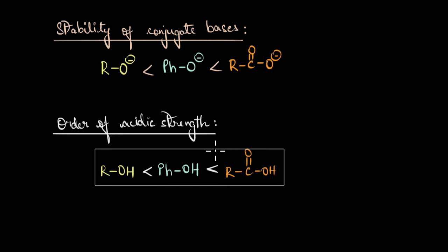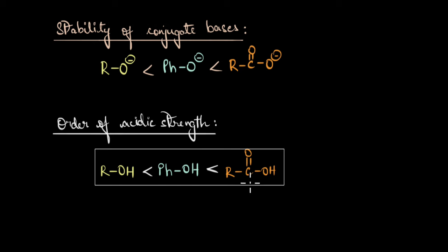There is another important factor that can further affect the acidic strength of a carboxylic acid — substituents. Depending on the type of substituent and its relative proximity to the COOH group, the acidic strength of a carboxylic acid can further vary. Let's learn more about this substituent effect on the acidic strength of carboxylic acids in the next video.